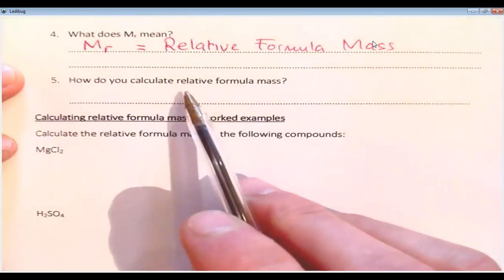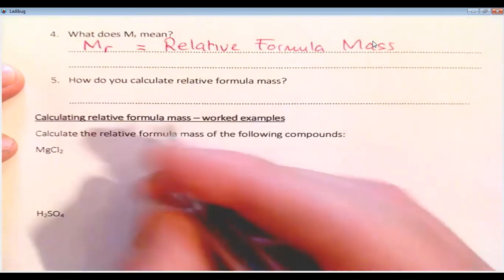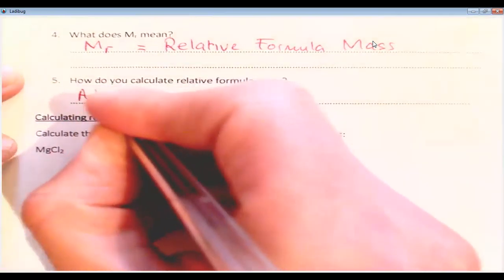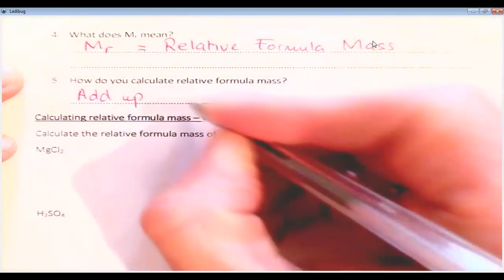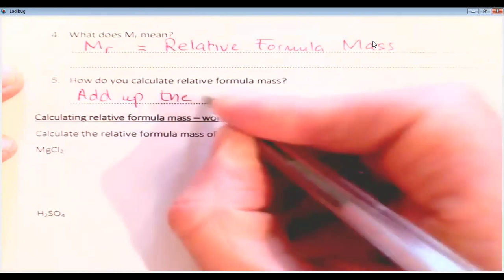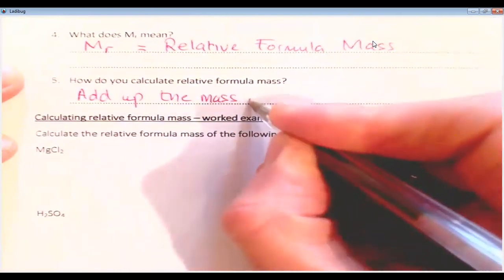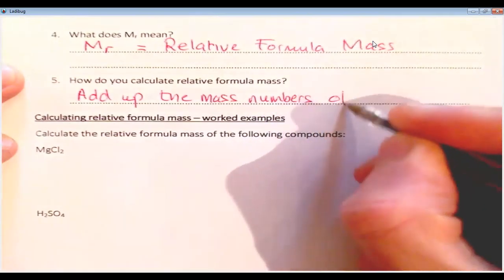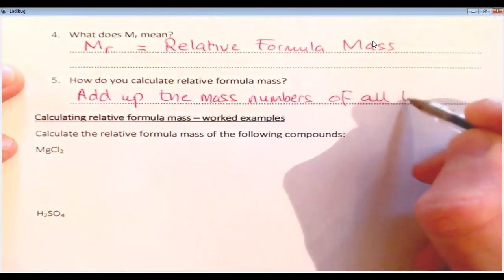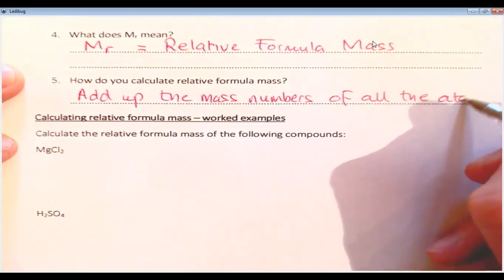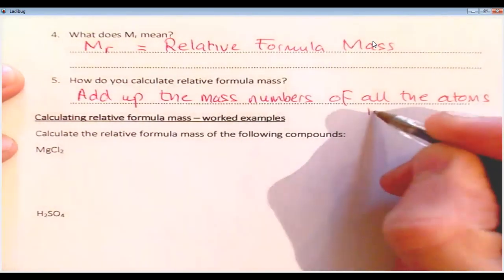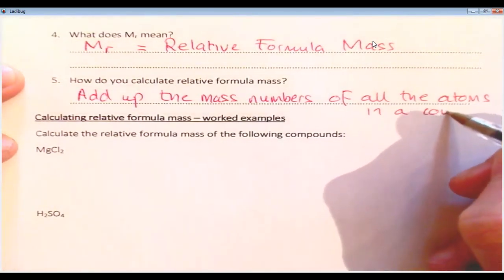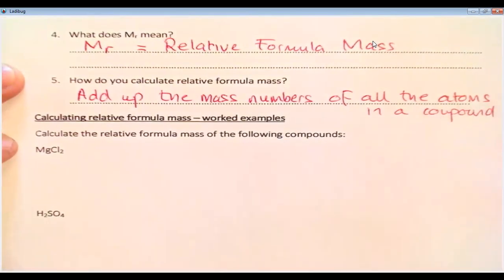Now underneath, we'll learn how to work out relative formula mass this lesson. It says, how do you calculate relative formula mass? It's very simple. So you add up the mass numbers of all the atoms in a compound. So I'll show you how we do that. Here are two examples.